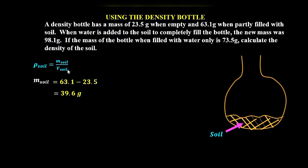Next, we need to determine the volume of the soil. We are told that when water is added to the soil to completely fill the bottle, the new mass was 98.1 grams. Water is added to the soil already in the density bottle until it is full. Our aim is to get the volume of water added. If we know the volume of water and also the volume of the density bottle, the difference will give us the volume of soil.